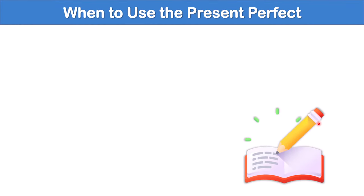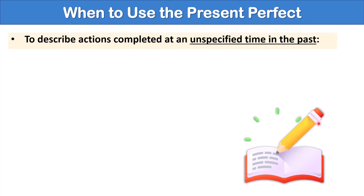So when do we use the present perfect? First of all, we can use the present perfect to describe actions completed at an unspecified time in the past. For example, Sarah and Jill have been to Spain.